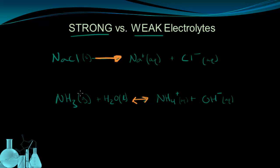So because not all of the ammonia ionizes, we call ammonia a weak electrolyte. Whereas table salt, on the other hand, completely dissociates. And we call that a strong electrolyte. So if something completely dissociates or ionizes, it's a strong electrolyte. If it doesn't completely dissociate or ionize, it's a weak electrolyte.